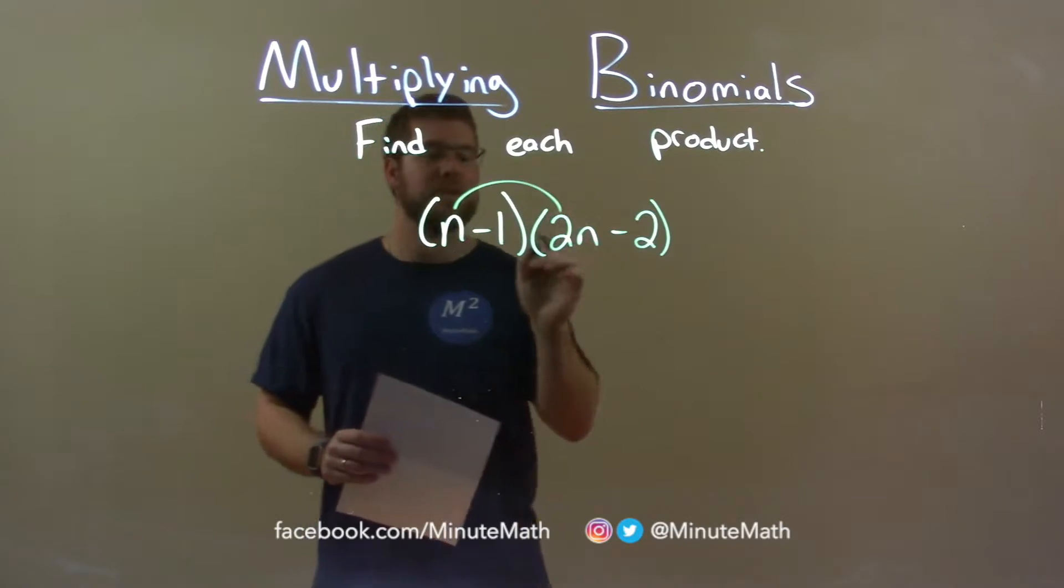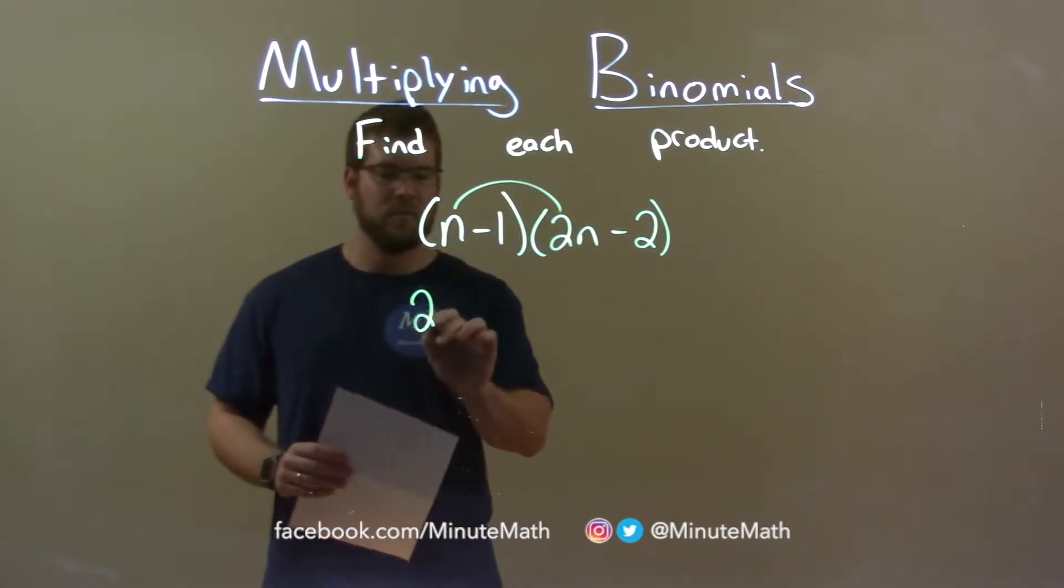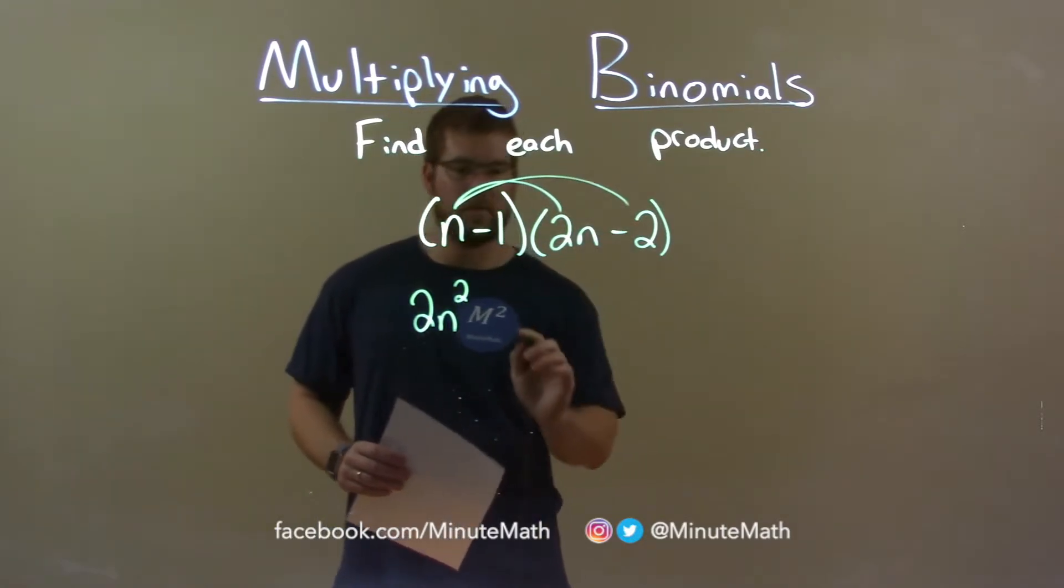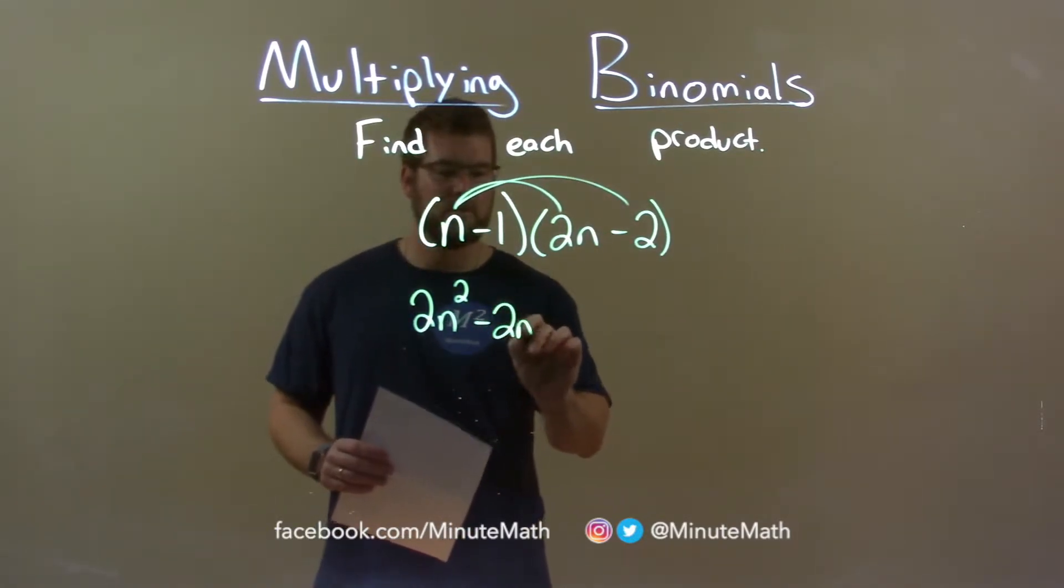So n times 2n is 2n squared, n times a minus 2 is minus 2n.